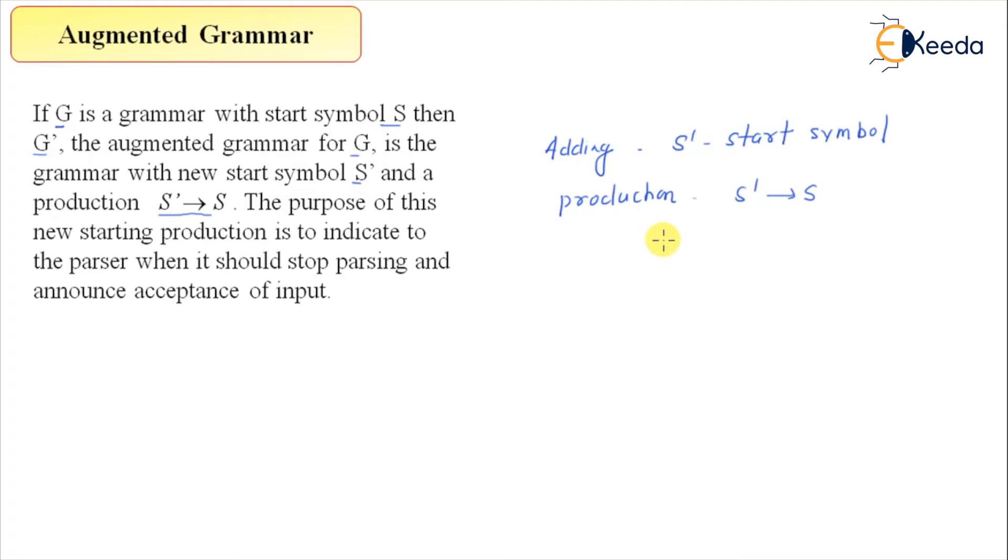And we are calling this grammar an augmented grammar, G'. What is the purpose? The purpose of this new starting production is to indicate to the parser when it should stop parsing and announce acceptance of input.